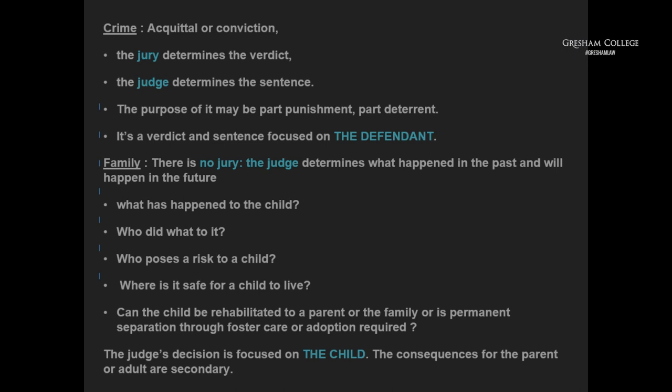The family court asks different questions: what happened to the child, who did it, who poses a risk in the future. You're looking at the past but deciding what happens in the future, unlike criminal courts which only decide what happened and that's the end of it. In family proceedings you're also planning for the future — where can the child live, whether adoption, foster care, or living with a relative — looking at a much broader canvas, which is why the rules of evidence are different.